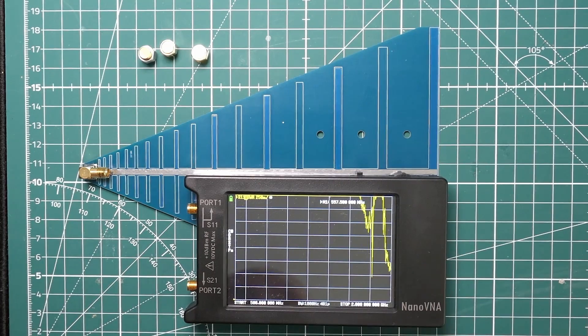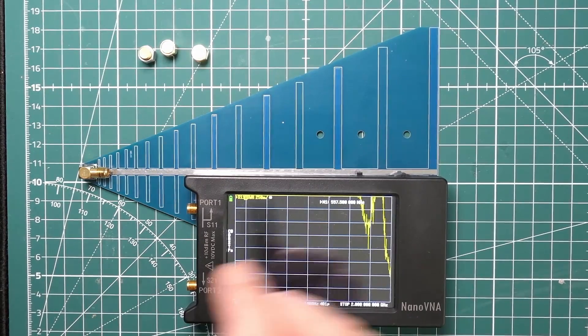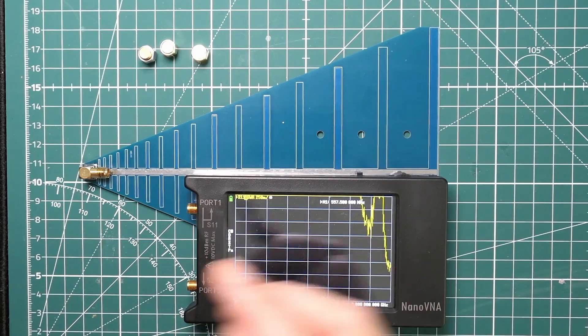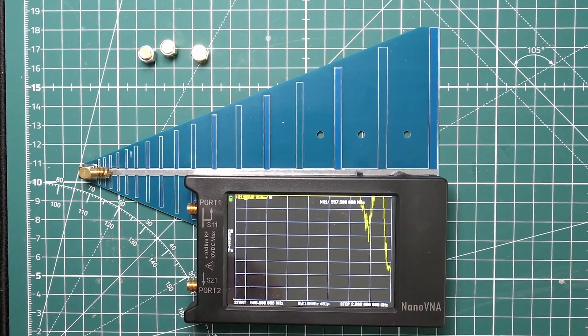Fortunately, my nano VNA is not particularly great. It only goes up to two gigahertz. So this is only covering a portion of the claimed bandwidth of this particular device. Anyway, we can have a look at least from 800 to two gigahertz.